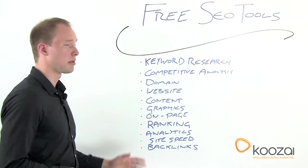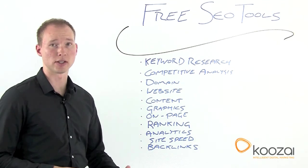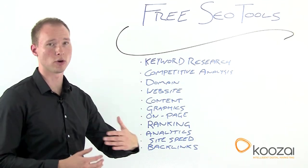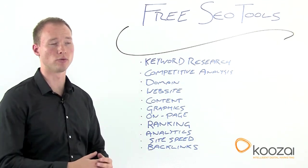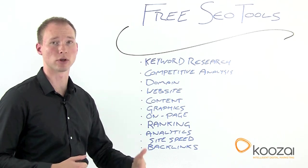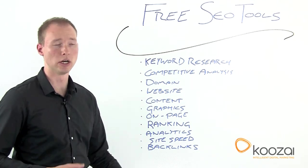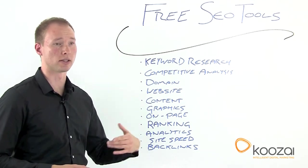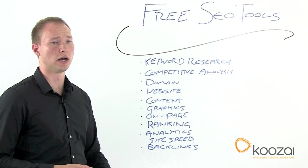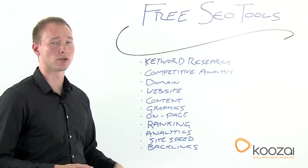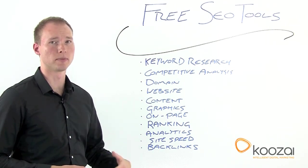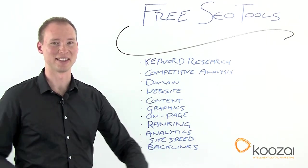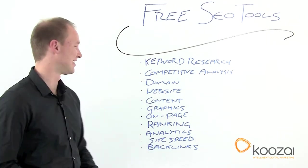Next up is on-page SEO. You can use some tools to check the on-page SEO is optimized for the keyword you're trying to rank for. Traffic Travis does this, as well as other tools such as WooRank.